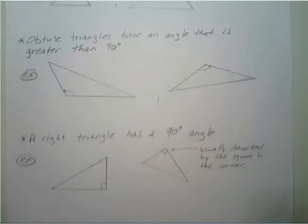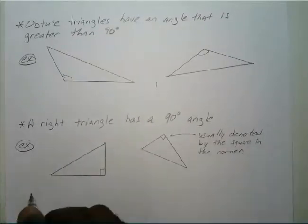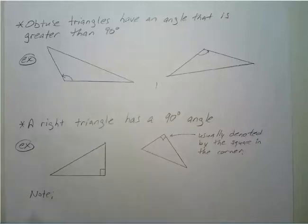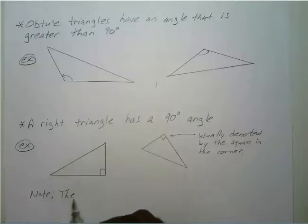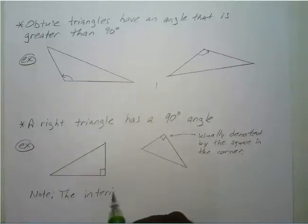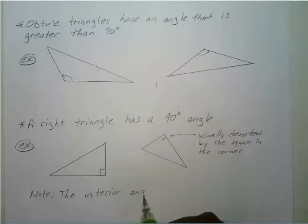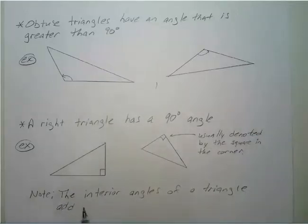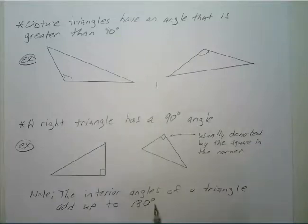Just a little reminder: all the interior angles — if you add up all the angles inside of a triangle — it equals 180 degrees. The angles of a triangle add up to 180 degrees.